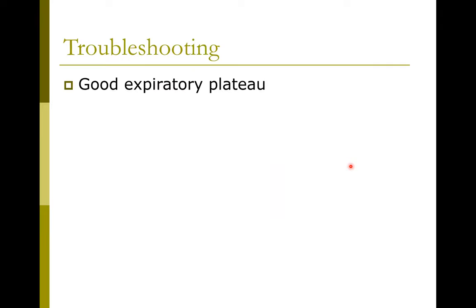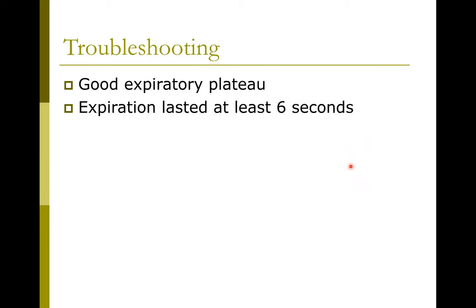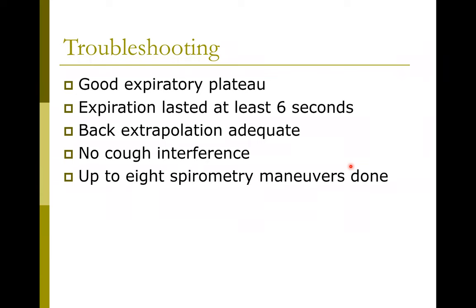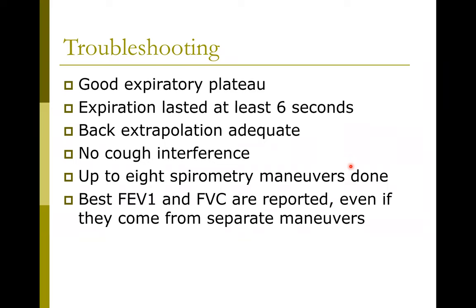When troubleshooting spirometry, you want to make sure you have a good expiratory plateau. Expiration should last at least six seconds — if less, the person may not have fully exhaled and you may be underestimating their vital capacity. Back extrapolation should be adequate, there should be no cough interference, and sometimes you have to rely on your technician's report. You may do up to eight spirometry maneuvers and then report best FEV1 and best FVC, even though they may not come from the same maneuver.